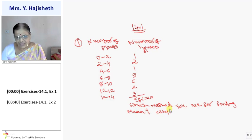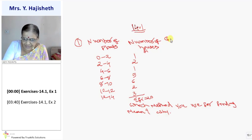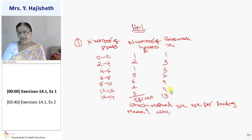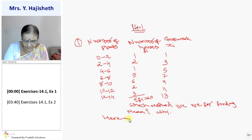Here from data you see, FI is very simple. And even if I find class mark XI, it is also very simple. 0 plus 2 by 2, 1, 2 plus 4 by 2 is 3, gap up to 2. So, 3 ke baad 5, 7, 9, 11, 13. My data is not very large. It is very simple.